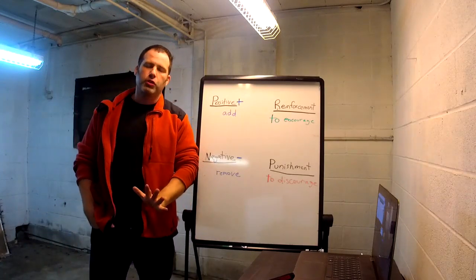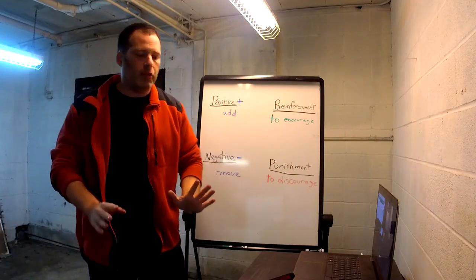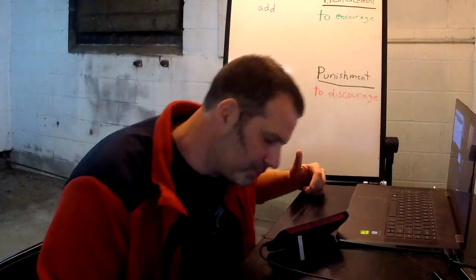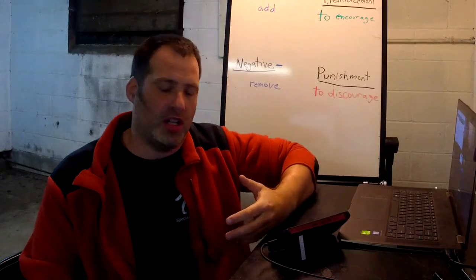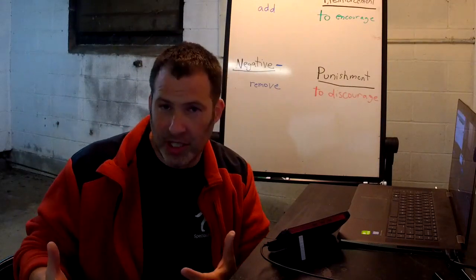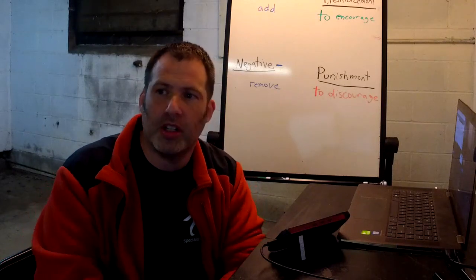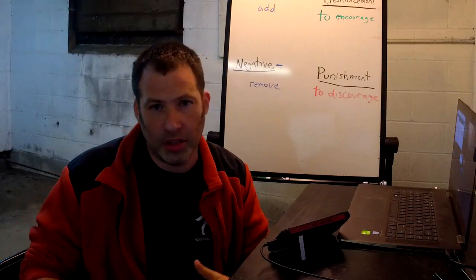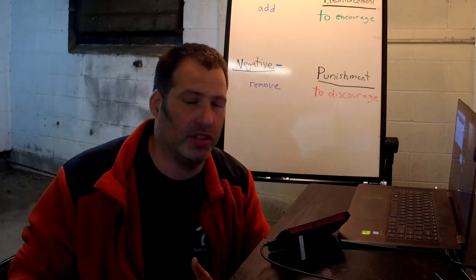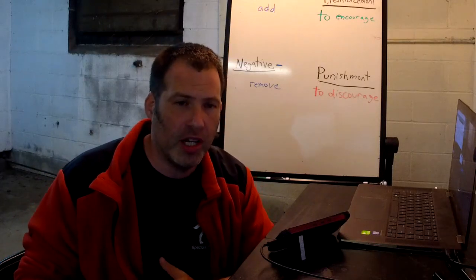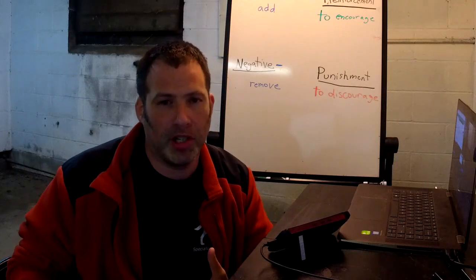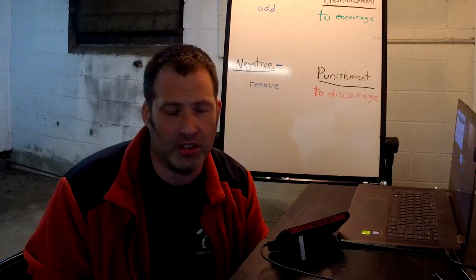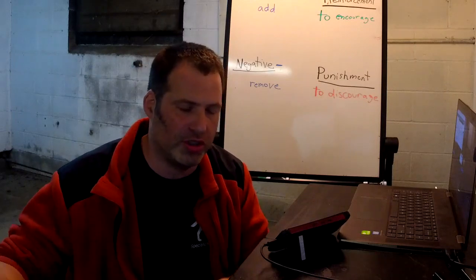So we're talking about operant conditioning — Skinner came up with this. It's a law of nature; it existed, he just put a name to it. The term 'operant' comes from 'operator,' meaning control — something has control over what they're doing. So we're talking about an organism that has control over what they're doing and then there are consequences that encourage or discourage that behavior. That's how operant conditioning differs from classical conditioning, which is much simpler — there's no control, it just happens.